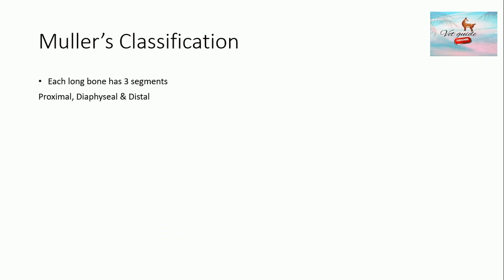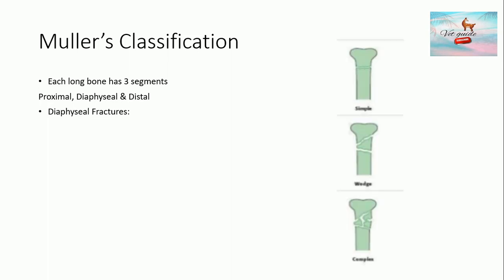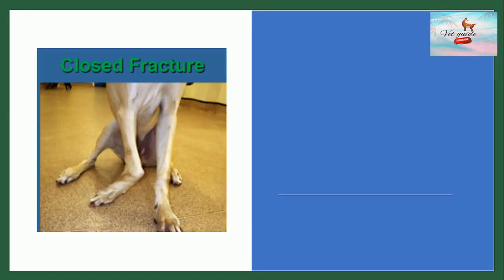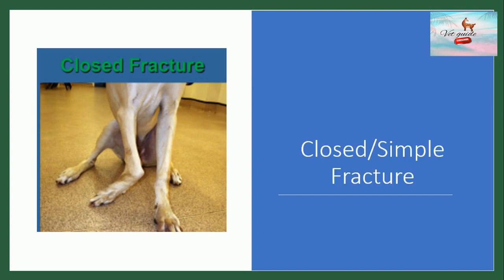There are three main segments: proximal, diaphyseal, and distal. According to Muller's classification, diaphyseal fractures can be simple, wedge, or complex, as clearly shown in the image. Proximal and distal fractures can be extra-articular, partial articular, and complete articular, which is also clearly shown in the image. A closed or simple fracture is one in which the bones break but the skin remains intact.